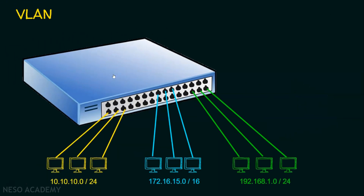Let's see how VLAN works. In this scenario, I am going to create three virtual local area networks — yellow VLAN, blue VLAN, and green VLAN. The yellow VLAN devices have the IP addressing scheme starting with 10.10.10, so 10.10.10.1, 10.10.10.2, and 10.10.10.3. The blue VLAN uses 172.16.15.1, 172.16.15.2, and 172.16.15.3. The green VLAN uses 192.168.1.1, 192.168.1.2, and 192.168.1.3. The ports are grouped so that each set of three ports belongs to one VLAN.